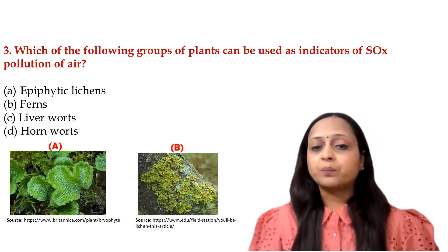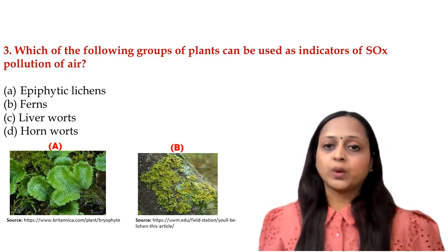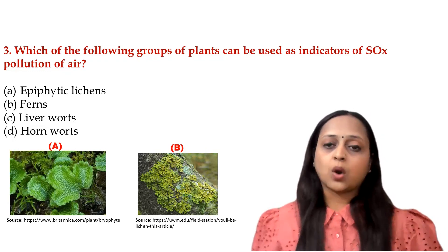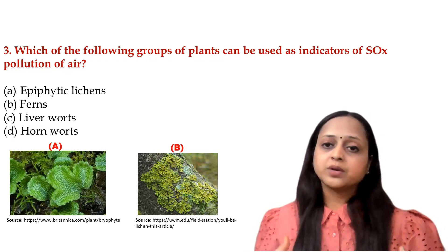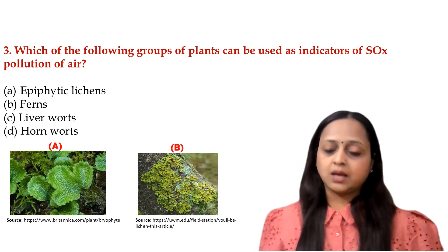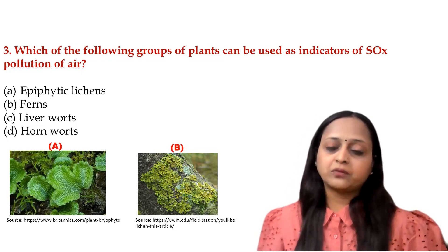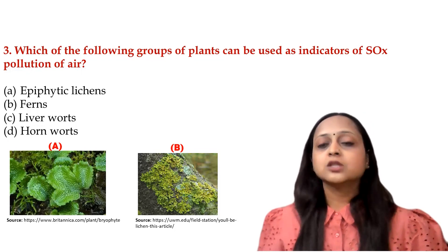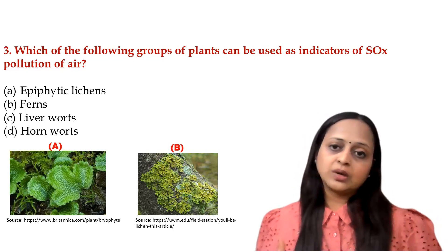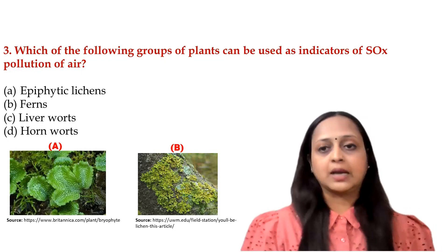The answer is apophytic lichen. Lichen is a symbiotic relationship between fungus and algae. Lichen can look like a leaf, tree, or rock. A major characteristic of lichen is that it is an association of both fungus and algae. When there is more pollution - particularly sulfur oxides in air - the number of lichen starts declining. So when sulfur oxide pollution is present, declining lichen numbers indicate that pollution. The answer is apophytic lichen.